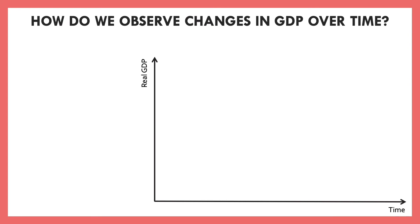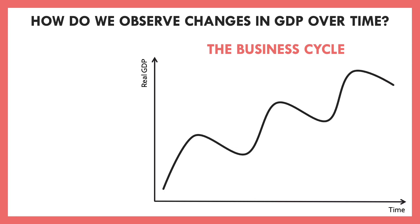We've just seen that GDP does in fact change over time, but how do we observe those changes? We do so with a model known as the business cycle. The business cycle shows the ups and downs of our GDP as time goes on. We have time along the x-axis and real GDP along the y-axis, so we see how our GDP goes up and down. This graph is a little exaggerated, but it gives us some key ideas.